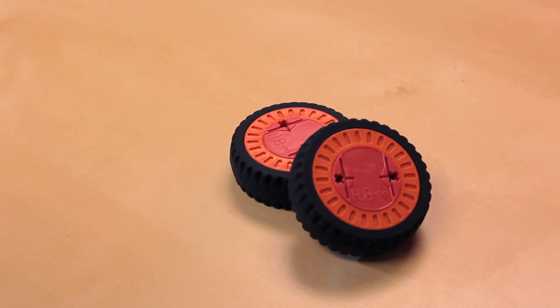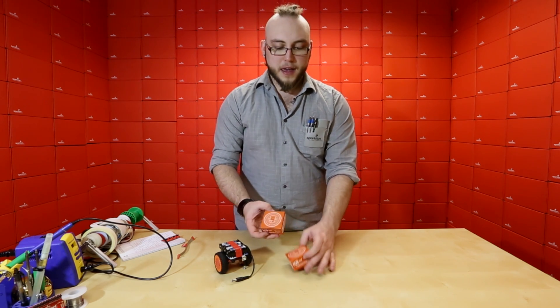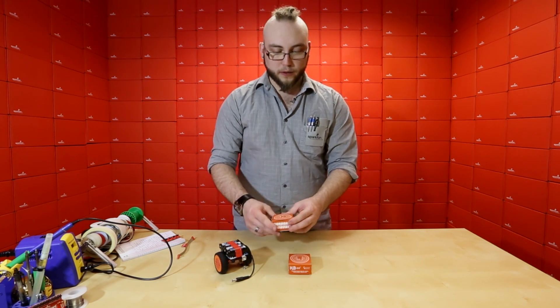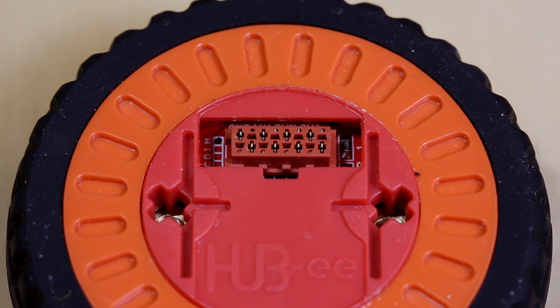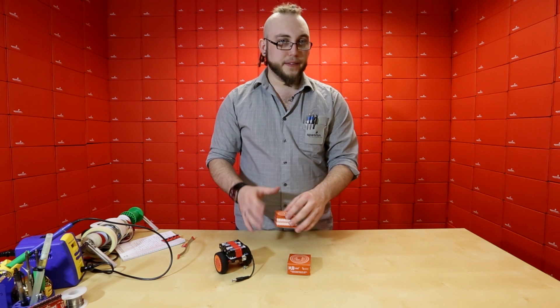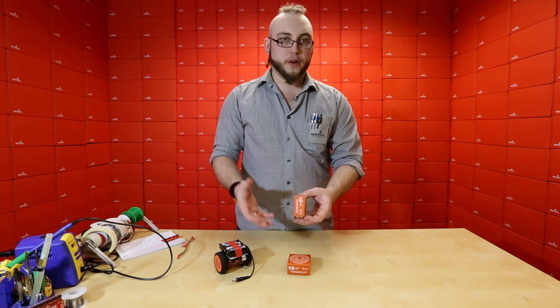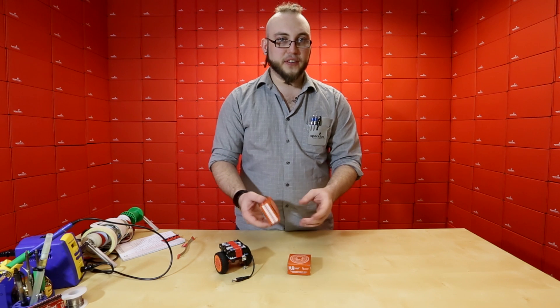Part of what made this project so easy to do is the fact that I was using these Hub E wheels from Creative Robotics. These are really cool little wheels because they actually incorporate a motor, a motor driver, and a quadrature encoder all inside the wheel itself. So there's no extra motor or extra hardware hanging out outside of the wheel.